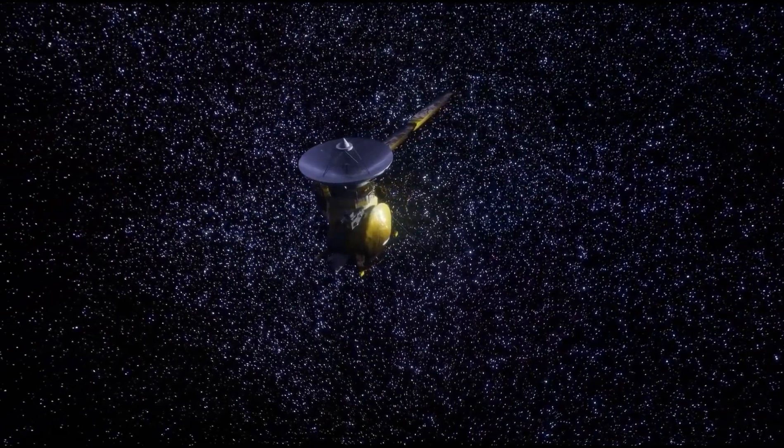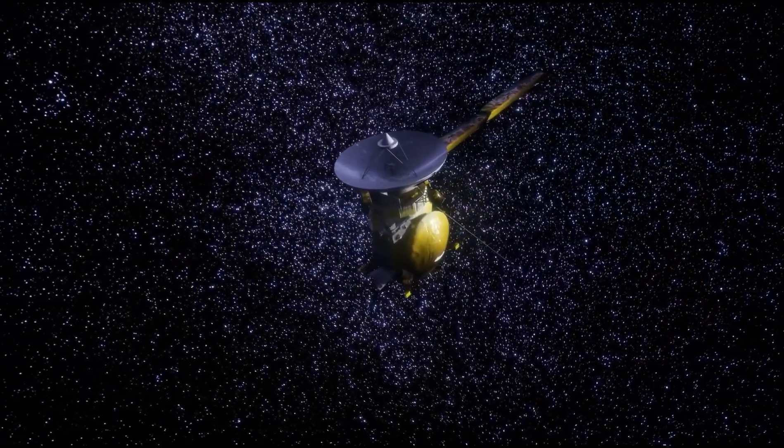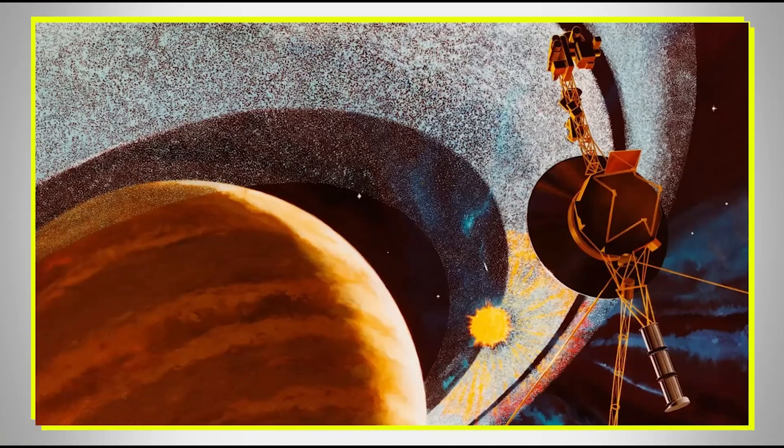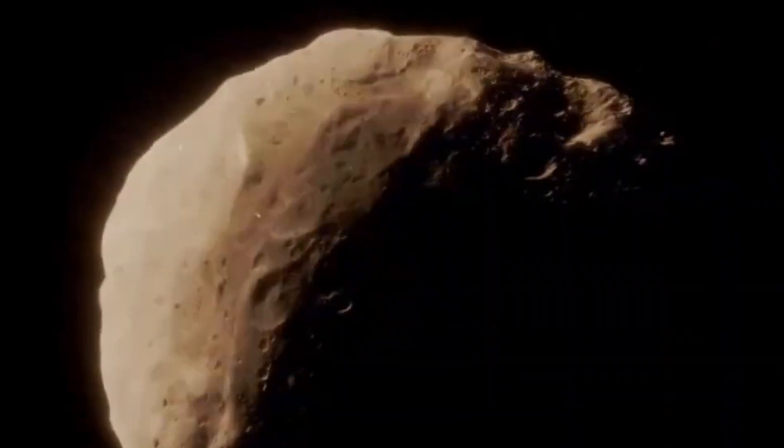The spacecraft entered the Jovian moon system on February 10, 1979, and in early March, it found a narrow ring around Jupiter that we had never seen before. This discovery alone was a major milestone for the NASA crew back on Earth.